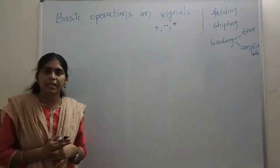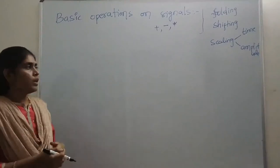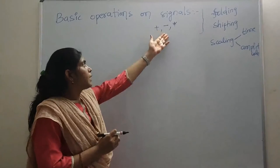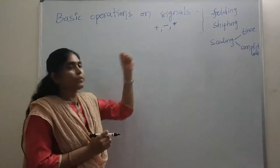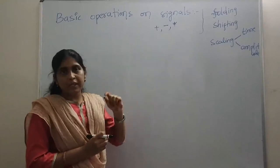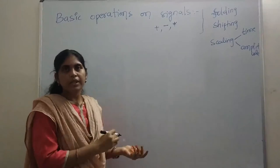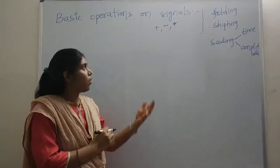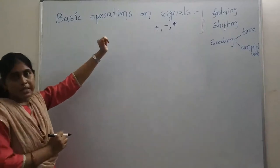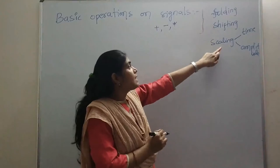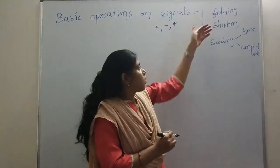Next we cover basic operations on signals. The general operations are addition, subtraction, and multiplication — where corresponding amplitudes at each time instant are added, subtracted, or multiplied. Apart from these, the special operations we can perform on signals are: time folding (time reversal), time shifting, and scaling — which includes time scaling and amplitude scaling. We will discuss each one by one.